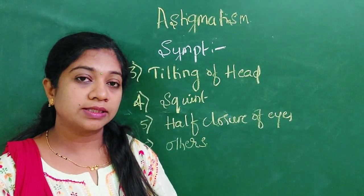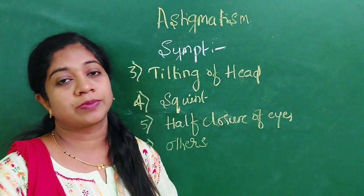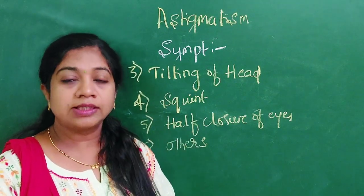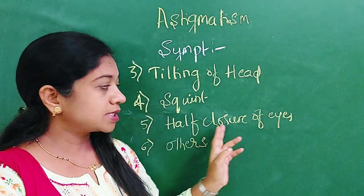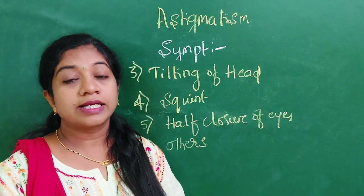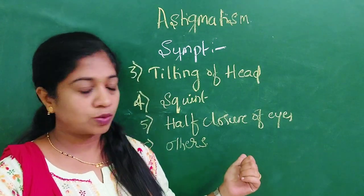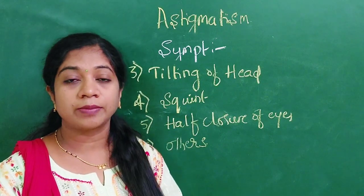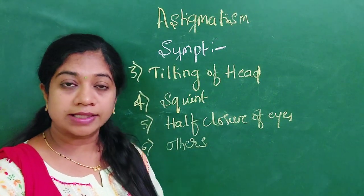Some patients tilt their head while watching TV or reading, as head tilting decreases image distortion and improves vision quality — a conscious adaptation in astigmatism. Squint can also appear in astigmatism patients. Another symptom is half-closure of the eyes, which cuts off rays through one meridian so the patient focuses through the other meridian, improving image quality. Because of constant asthenopic symptoms, patients rub their eyes frequently, which can cause falling of eyelashes, hyperemia of the lid margin, and even repeated chalazion formation.